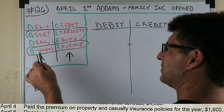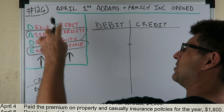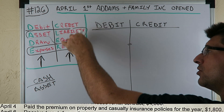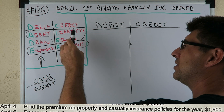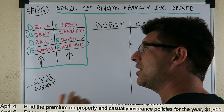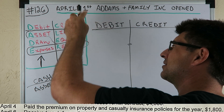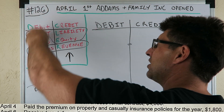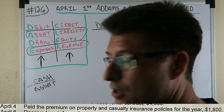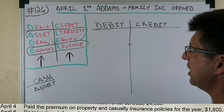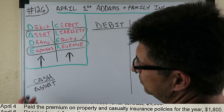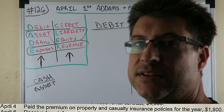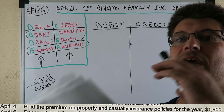If assets, draws, or expenses are increasing in value, you debit them. If assets, draws, or expenses decrease in value, you would credit them. Liability, equity, or revenue increasing in value — you would credit them. If liability, equity, or revenue are decreasing in value, you debit them. You also need to know that cash is an asset, because a lot of these journal entries are going to involve cash.